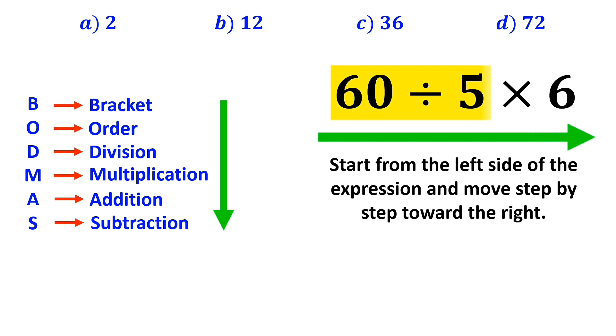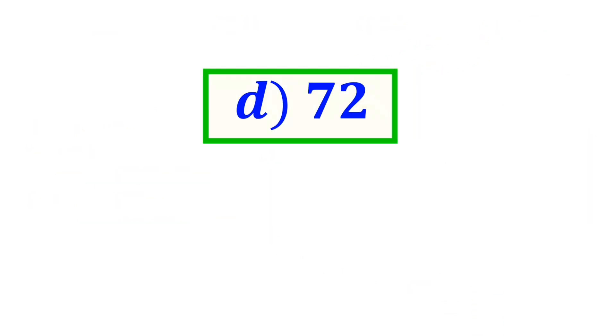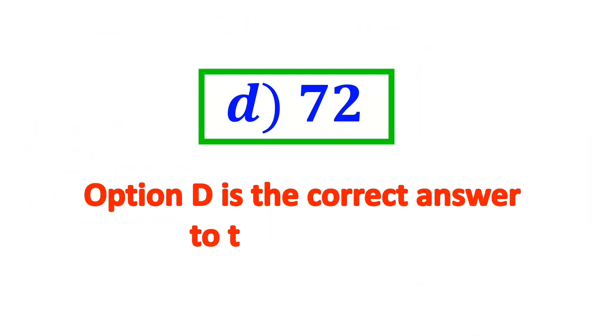So, first we perform the division between 60 and 5, which simplifies the expression to 12 multiplied by 6. Finally, the value of this expression will be 72. Therefore, option D is the correct answer to this question.